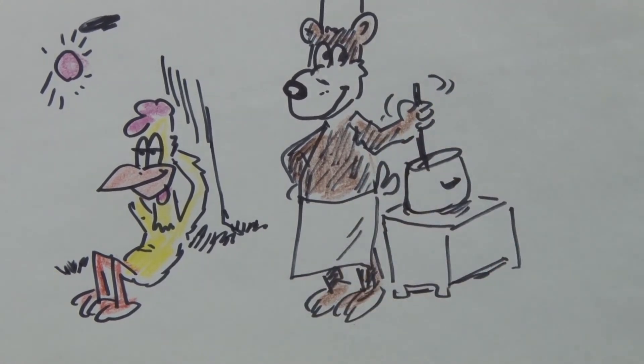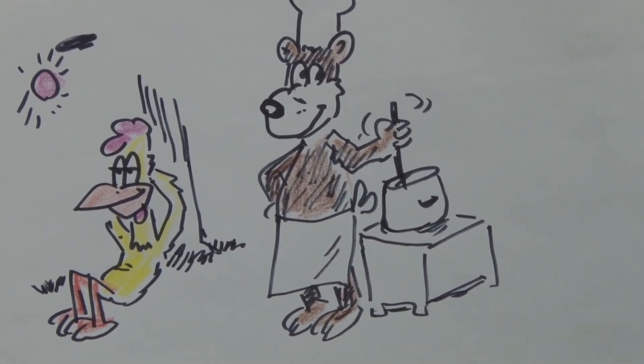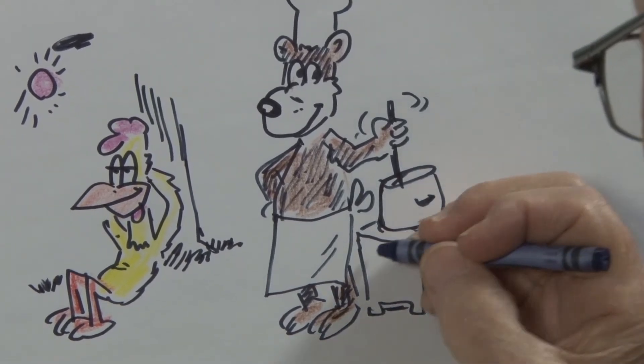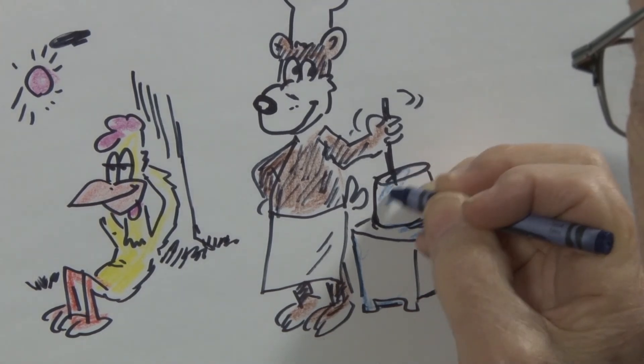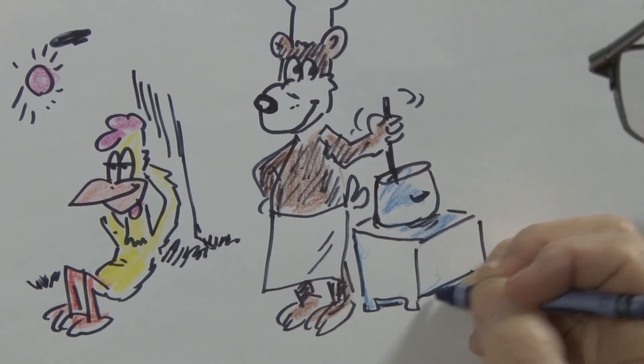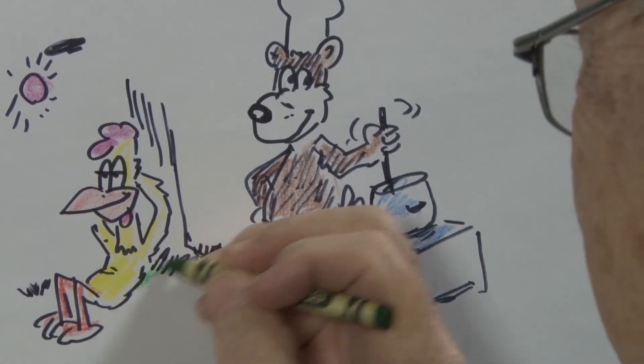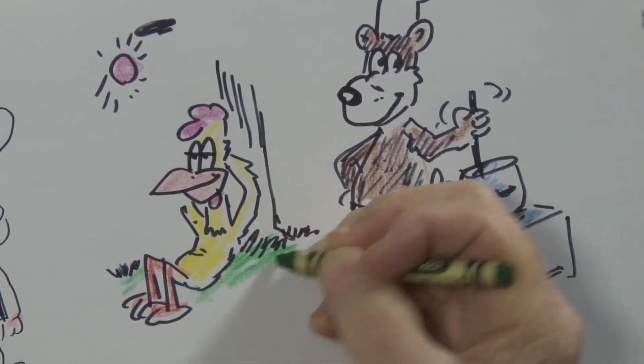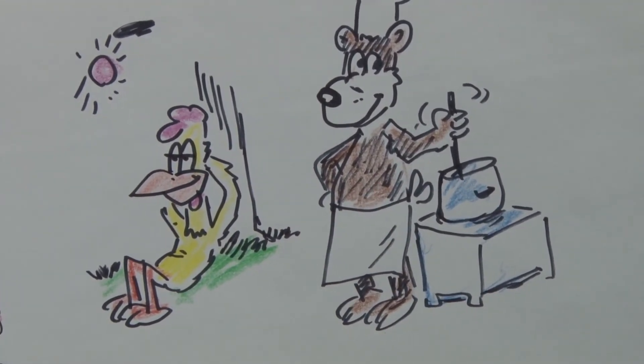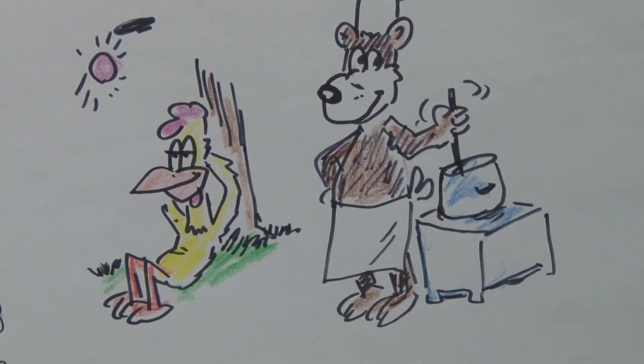Of course, the apron is white and as far as the stove, it's just kind of metallic looking. Oh, I almost forgot the background on our lazy chicken.